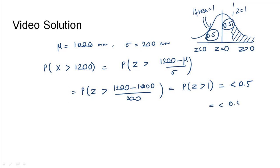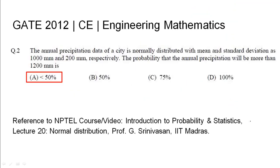So the probability would be less than 0.5. Converting this to percentage, that would be 0.5 into 100, giving us less than 50 percent. The probability that the annual precipitation will be more than 1200 mm is less than 50 percent, that is option A. The relevant NPTEL reference has been listed.